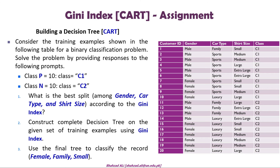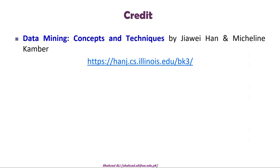That's it for today's lecture. As an assignment, you have an example dataset and you need to apply the CART algorithm — calculate Gini index, find the best splits, and construct the complete decision tree for attributes gender, car type, and shirt size. At the end, calculate the class of the given test record. If you have any questions, ask in the comments. Allah Hafiz.